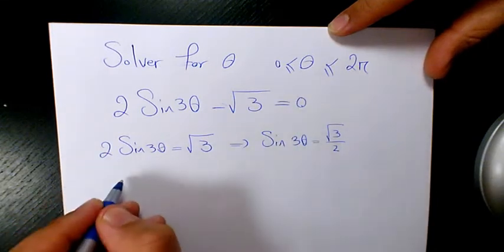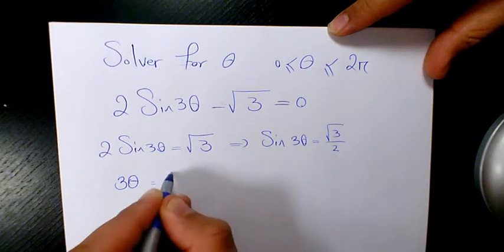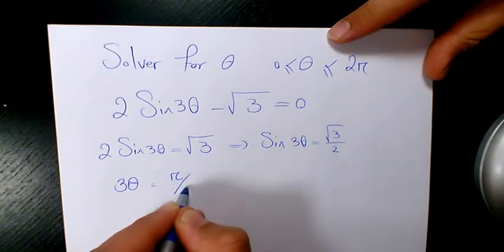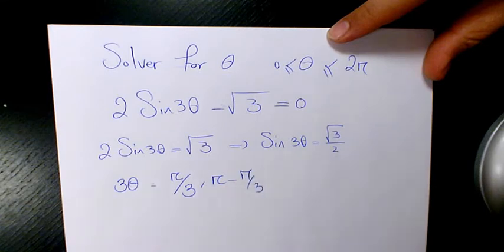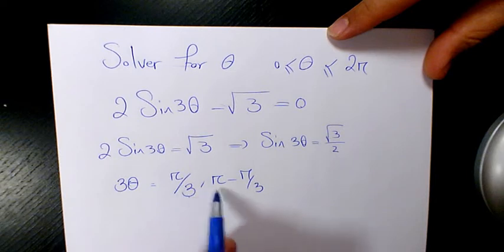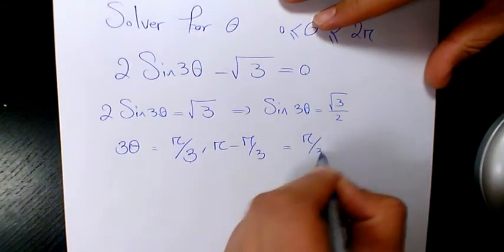I'm going to say 3θ is going to be π over 3 and π minus π over 3, because sine is positive in quadrant one and quadrant two. So it's going to be π over 3 and π minus π over 3, so it's going to be basically π over 3 and 2π over 3.